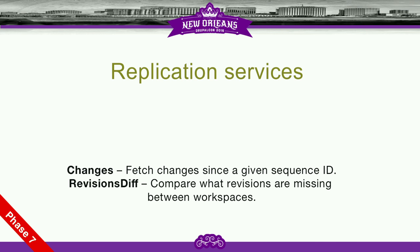Once we've got that, we can look at replication services. We've got two services — the changes service and the revision diff service — part of the replication module. The changes service tells us what has changed on the site since a certain sequence ID. Then the revision diff service lets you compare those changes against another workspace or site to know what revisions are different. When we come to do replication, we only replicate the revisions that are different between the two.